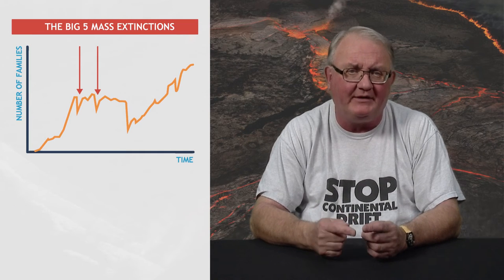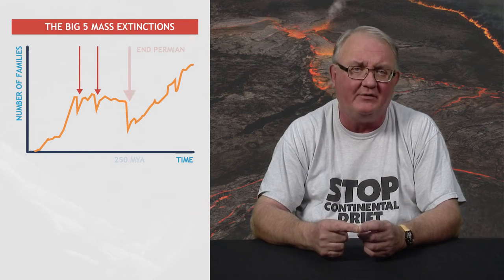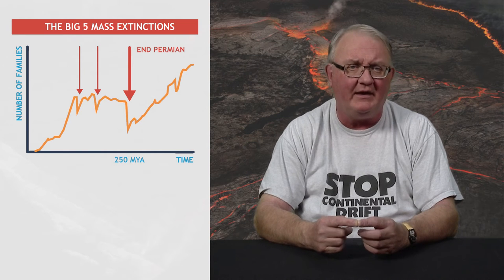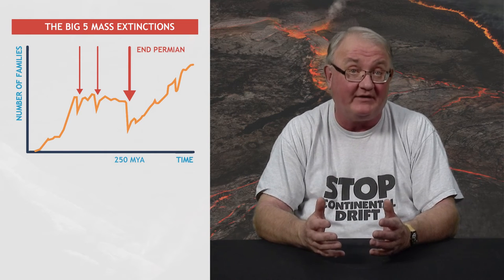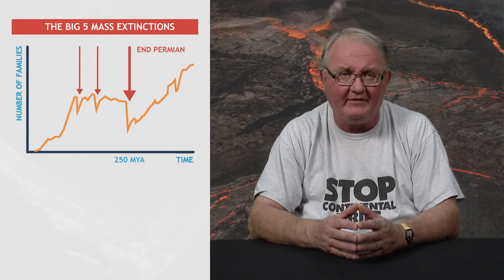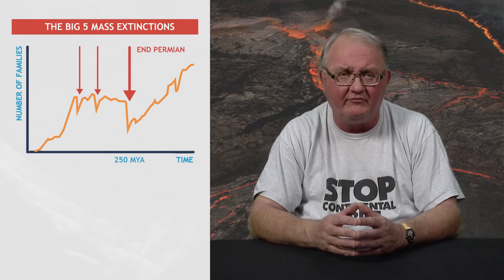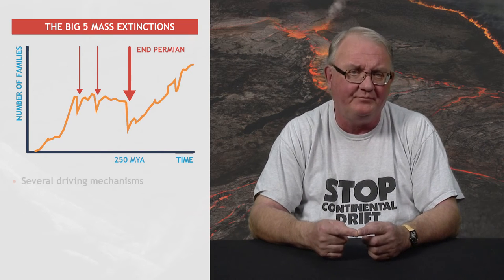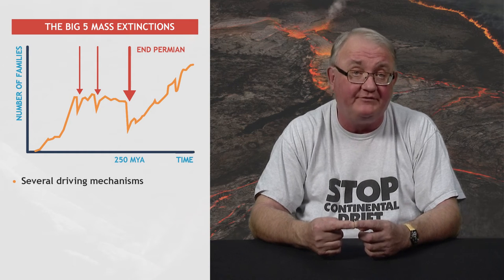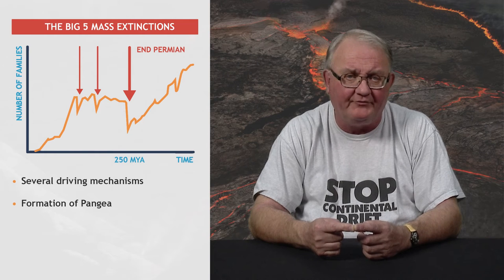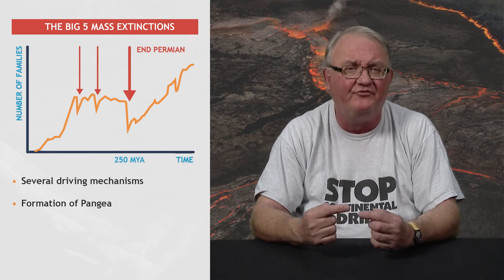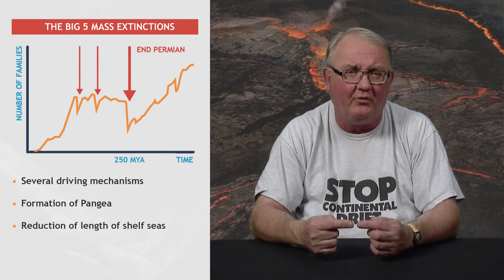The end Permian extinction, about 250 million years ago, is the largest mass extinction recognised in the fossil record. It may have led to the demise of 96% of marine species. At least nine different driving mechanisms have been suggested, and almost certainly it was the result of the coincidence of two or more of these. This extinction coincided with the formation of a supercontinent, Pangaea, which stretched between the poles. This amalgamation of all continental blocks would have greatly reduced the length of shelf seas available to shallow water organisms.